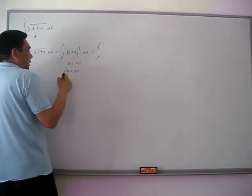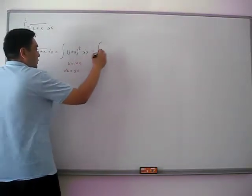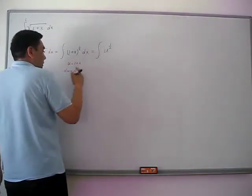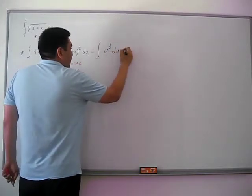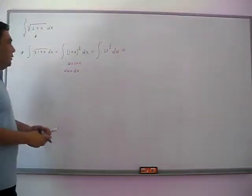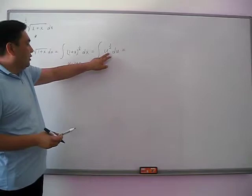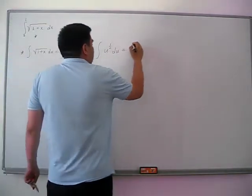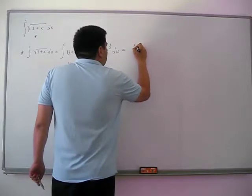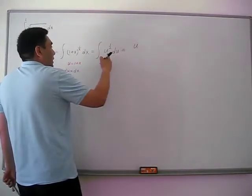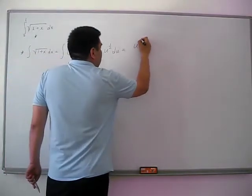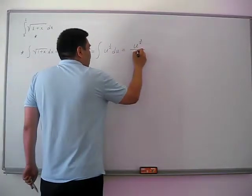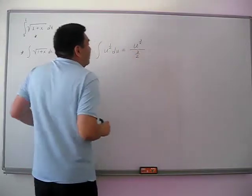Integral of u to the power of 1 half, and dx is du. Now, as you can see here, we can use just the power rule of the integration. Then, it will be u to the power of 1 half plus 1 is 3 half over 1 half plus 1 is 3 half.